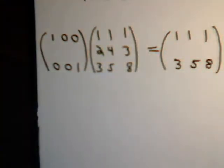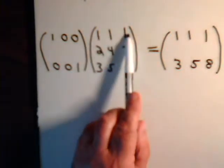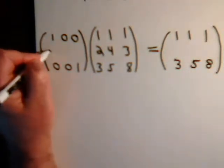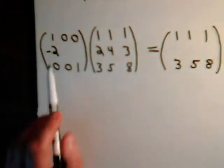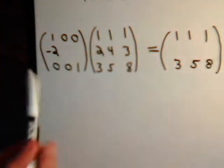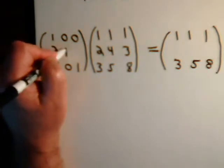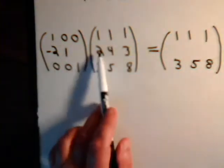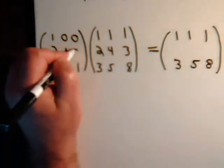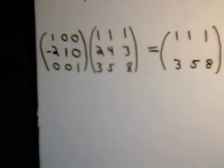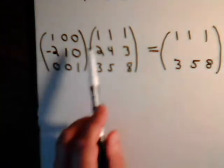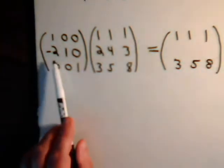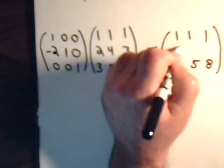Now, we want to multiply the first row by minus 2 and add it to the second row. So the first position in the middle row is minus 2 — that is what we multiply the first row by. The number multiplying the second row would be 1. So we have minus 2 times the first row plus 1 times the second row. That gives us minus 2 plus 2, which is 0 — which is what we wanted.